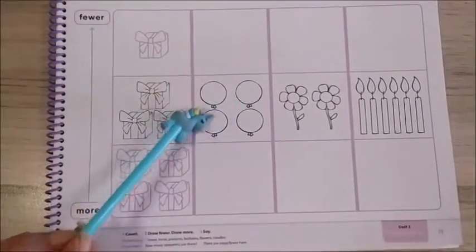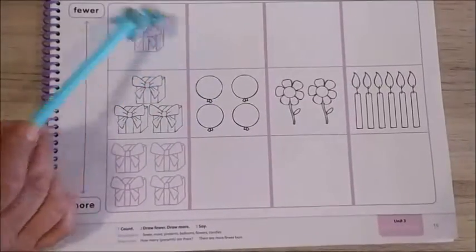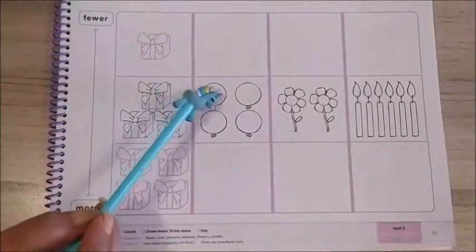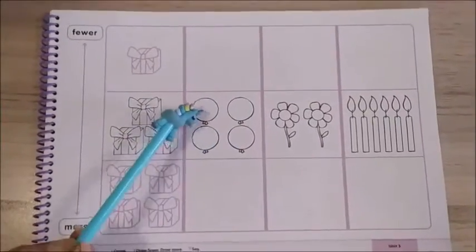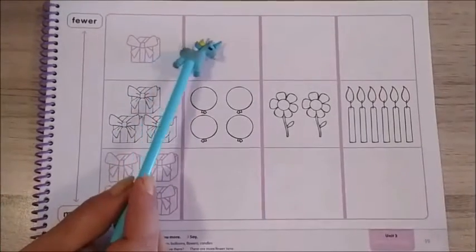now here we have balloons, globos. Tenemos que poner aquí arriba fewer, menos. For example, si tenemos cuatro, ¿cuántos vas a poner para que sean menos?